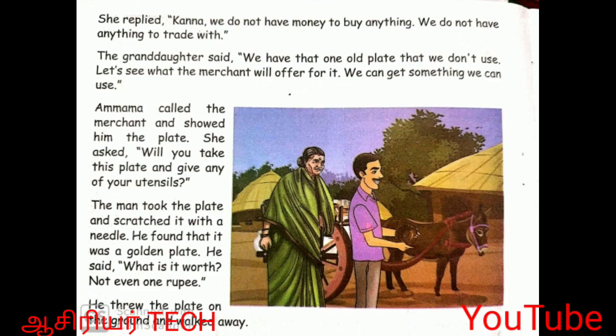She replied, 'Kanna, we do not have money to buy anything. We do not have anything to trade with.' The granddaughter said, 'We have that one old plate that we don't use. Let's see what the merchant will offer for it. We can get something we can use.' Amma called the merchant and showed him the plate. She asked, 'Will you take this plate and give any of your utensils?' The man took the plate and scratched it with a needle. He found that it was a golden plate. He said, 'What is it worth? Not even one rupee.' He threw the plate on the ground and walked away.